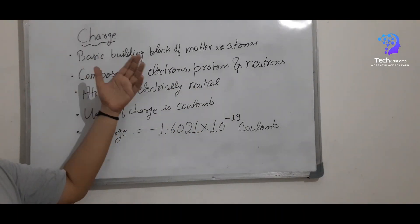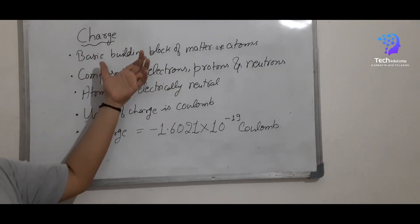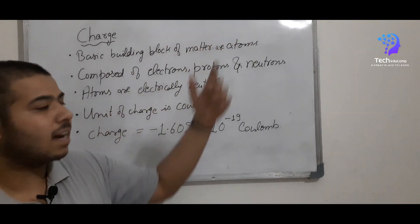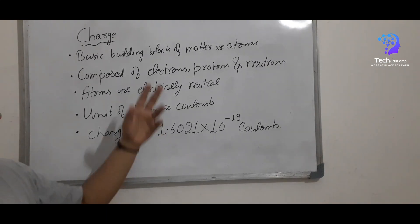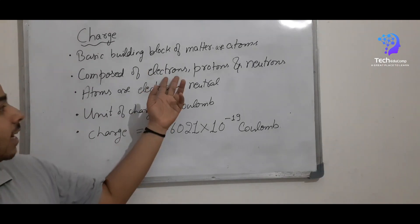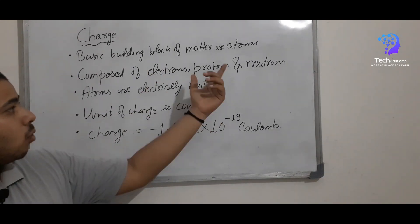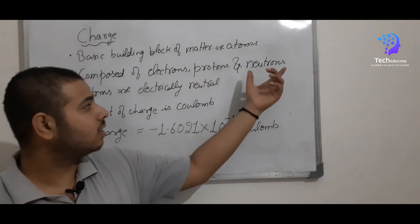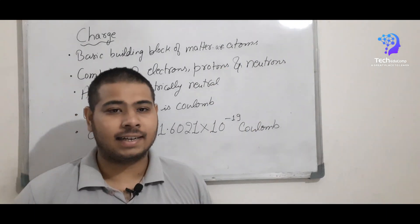So before that we already know that the basic buildings of all metals are atoms. They compromise of electrons, protons and neutrons. We also know that electrons are negatively charged, protons are positive, and neutrons do not contain any charge.